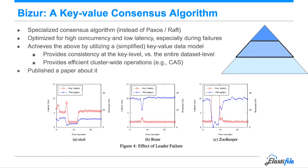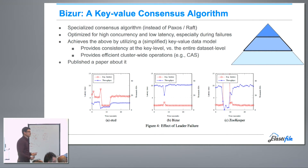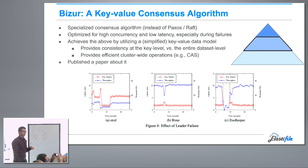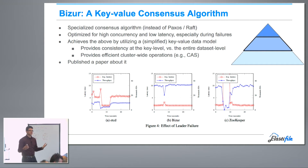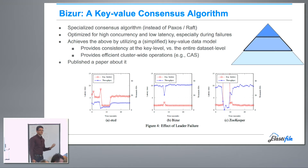How did we achieve this? Bizur is a special consensus algorithm used instead of Paxos or Raft. Zookeeper is based on something similar to Paxos; ETCD is based on Raft. Bizur is optimized for low latency and especially for maintaining low latency during failures. It achieves this by building consensus on individual keys rather than on the entire system. Raft and Paxos give you consistency across the entire data model, but that's too strong — we only need consistency on a key-value basis.